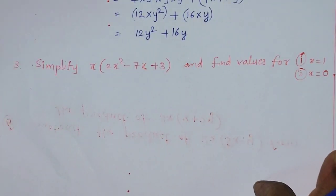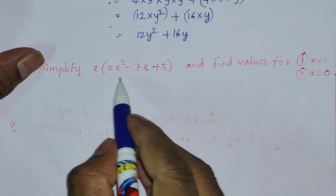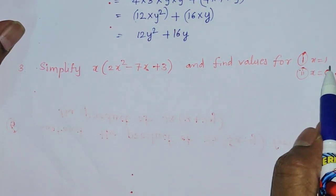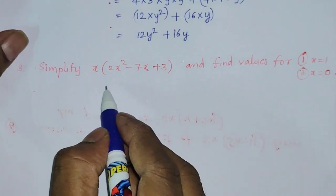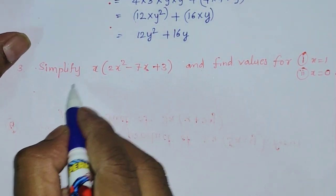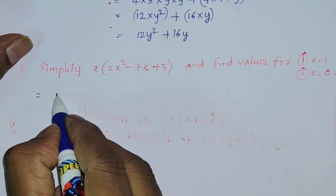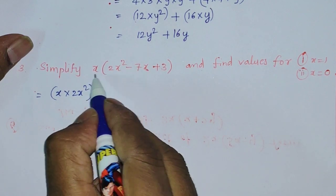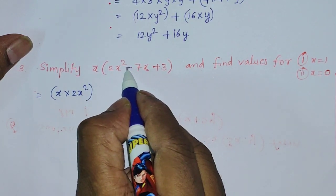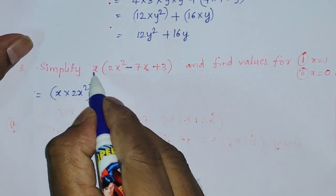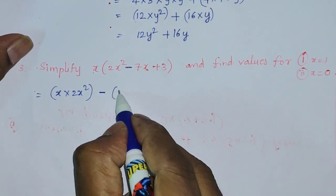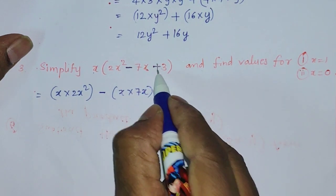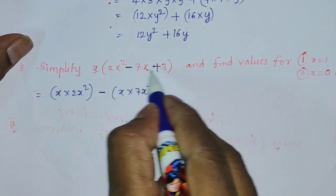Next problem: simplify x into 2x squared minus 7x plus 3, and find the values for x equals 1 and x equals 0. First we have to simplify. So multiplying: x into 2x squared, then minus x into 7x, then since there is plus, plus x into 3.